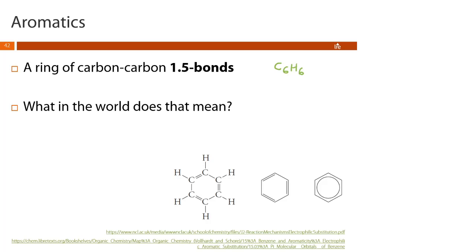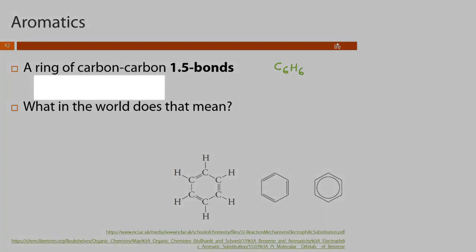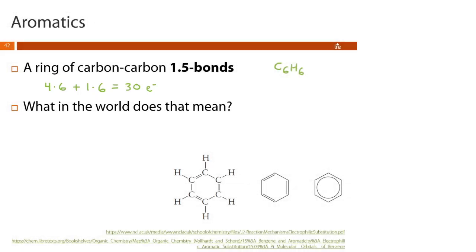So the first thing we need to do is count the total number of valence electrons. So carbon has four valence electrons and we have six carbons. Hydrogen has one valence electron and we have six hydrogens. So we have a total of 30 valence electrons to work with here. Okay, step two, we're going to use single covalent bonds to connect the atoms together. And I want you to do this where all six carbon atoms form a ring.